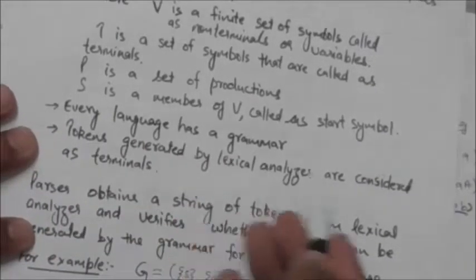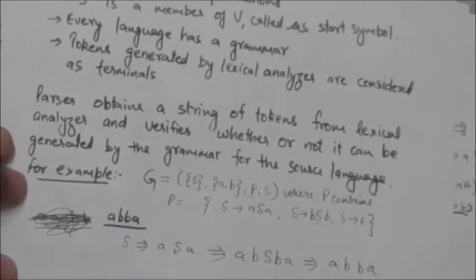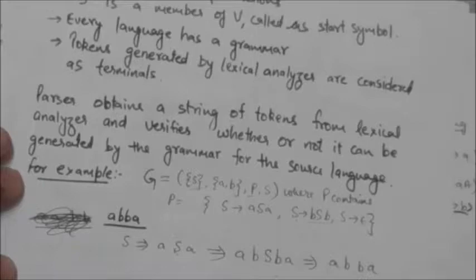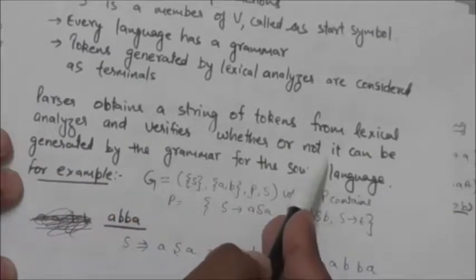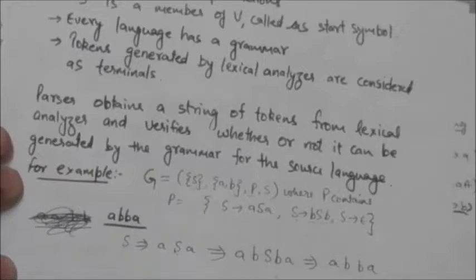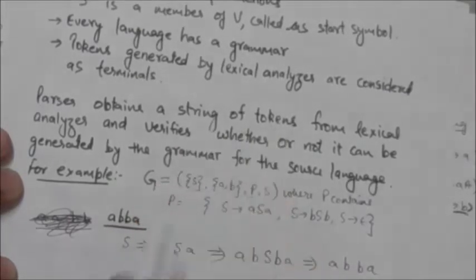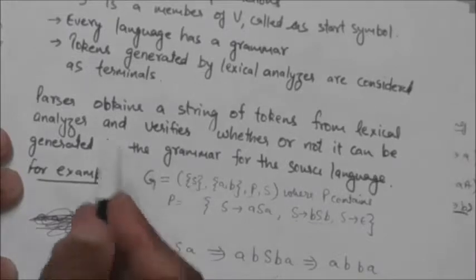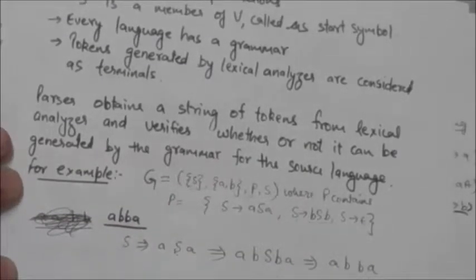The tokens generated by the lexical analyzer are considered as terminals. The parser obtains a string of tokens from the lexical analyzer and performs syntax analysis. It verifies whether or not this string of terminals can be generated by the grammar of the source language. If the string is generated by the grammar, it is syntactically correct; if not, it has errors.